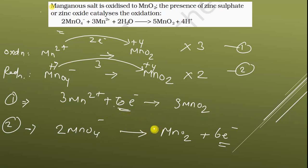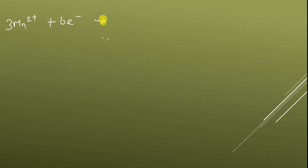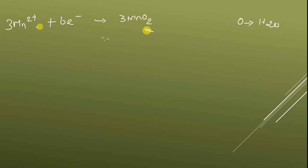There are 2 Mn atoms on the left and 3 Mn atoms on the right after multiplying. Now to balance the oxygen atoms, we add H2O on the opposite side. There are 6 oxygen atoms here, so I am writing 6 H2O here.